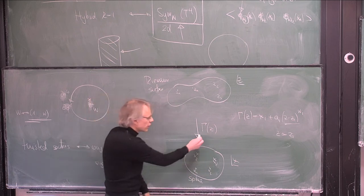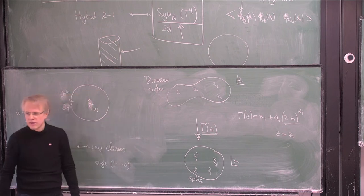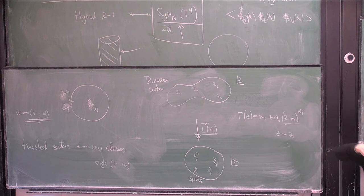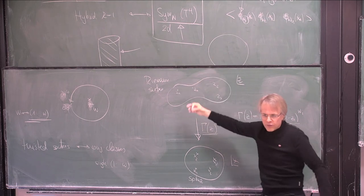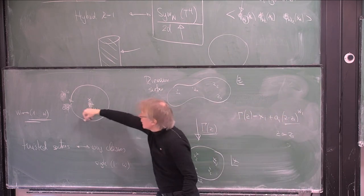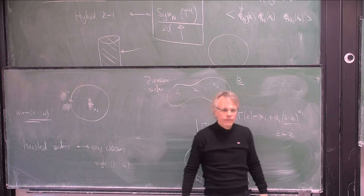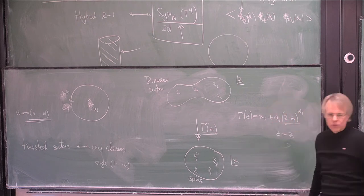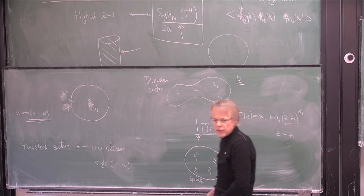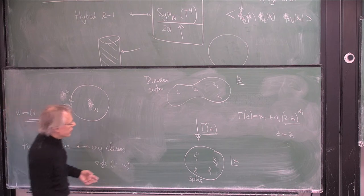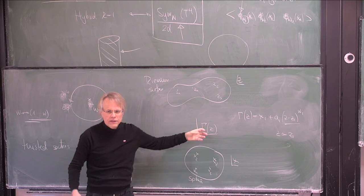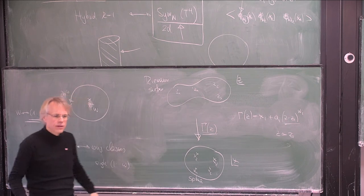The trick is to calculate this correlation function of twisted sector fields by lifting them to an auxiliary Riemann surface so that you undo the monodromy behavior. The whole information about the correlation function is captured in the conformal factor associated to this holomorphic covering map — you can just read off the conformal dimensions of sigma from that conformal factor, as it will be a product of gamma-prime factors.